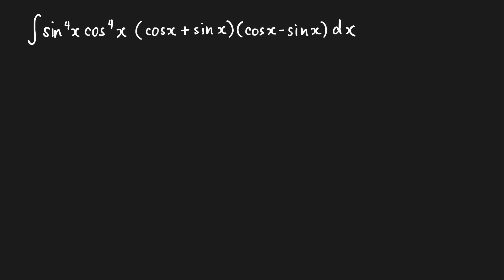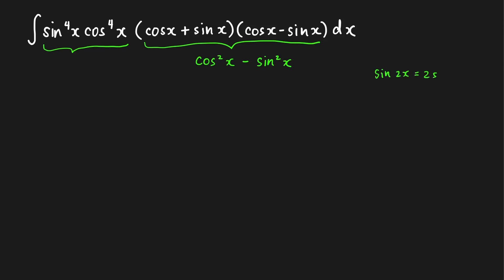Now let's evaluate this next integral. This is not hard to evaluate if you know your trigonometric identities. First, we take the product of the sum and difference terms, which equals cosine squared x minus sine squared x. Recalling the double angle identity for sine: sine of 2x equals 2 sine x cosine x. So the sine x cosine x factor becomes one half sine 2x, raised to the fourth power.